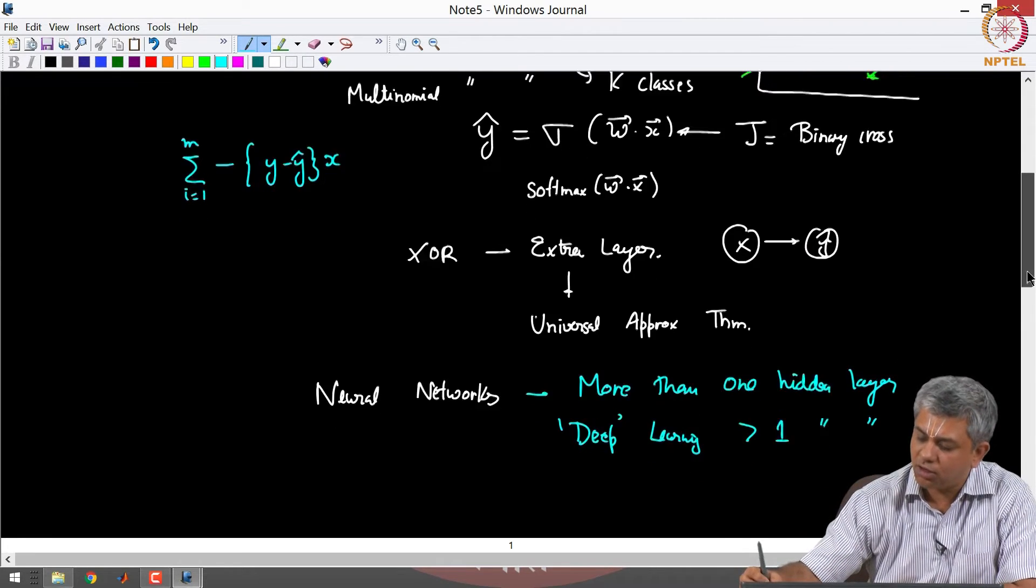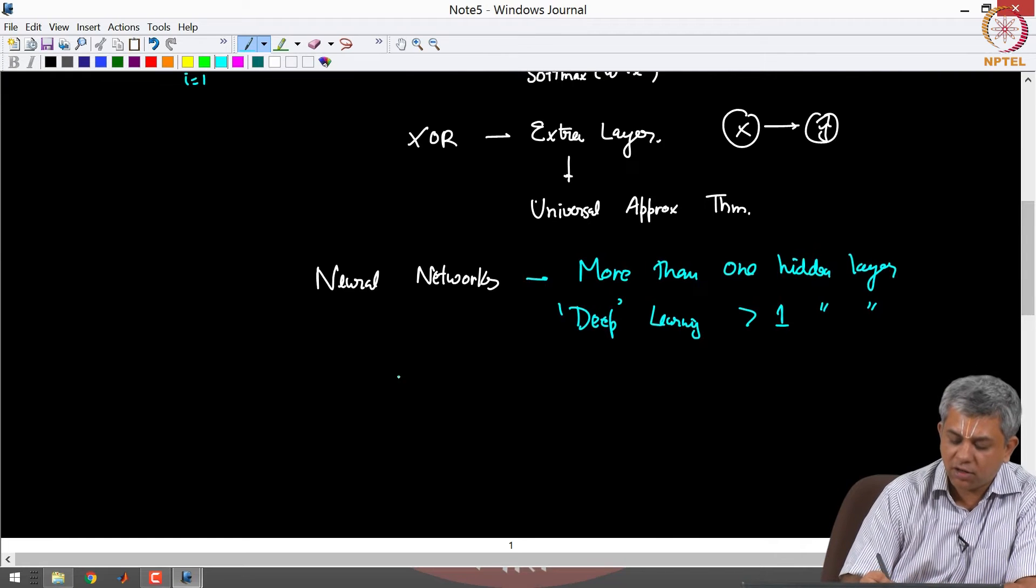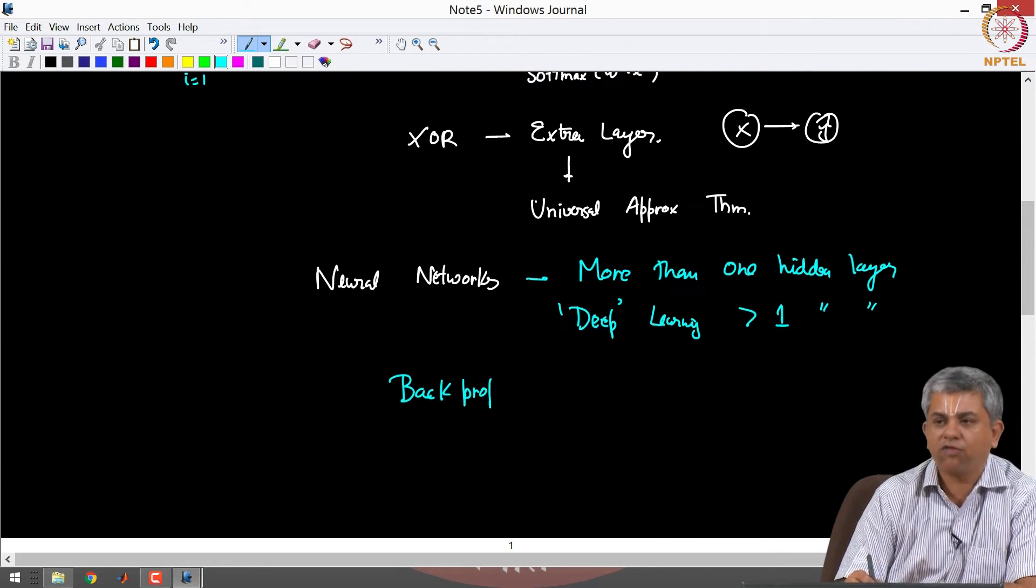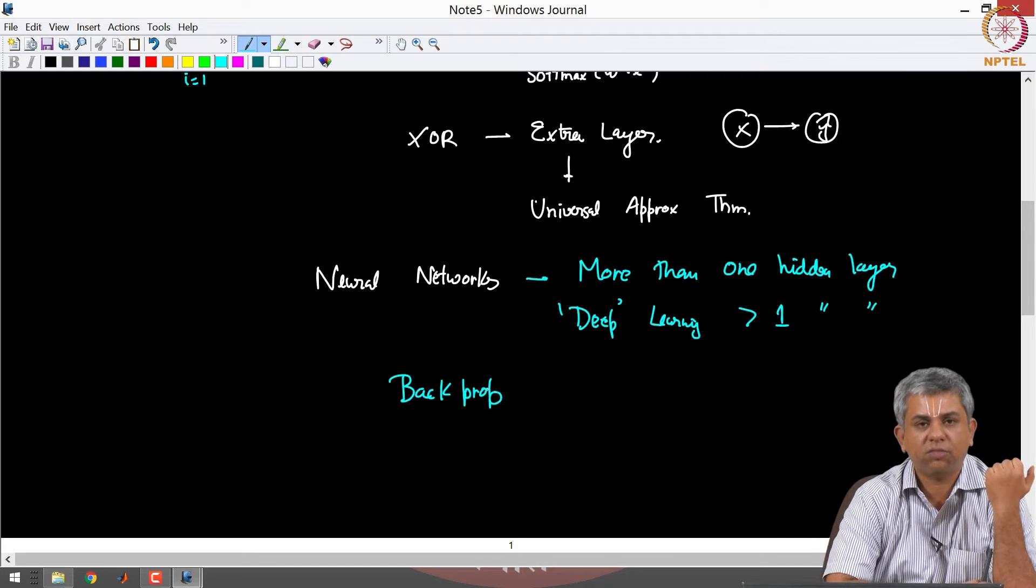In order to train a deep neural network you need our back propagation algorithm of which we saw the rudiments in the previous video.